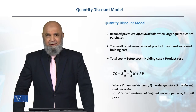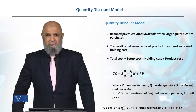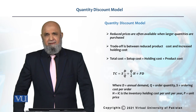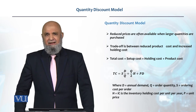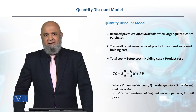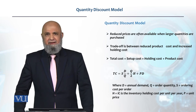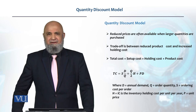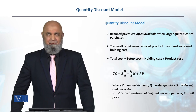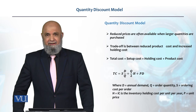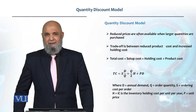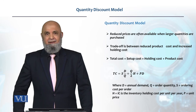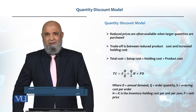Let's look at the quantity discount model. Quantity discounts are available in many cases. For example, if you go to a market, instead of buying one kilo of onions, you can buy a larger quantity and receive a discount.